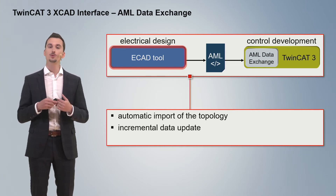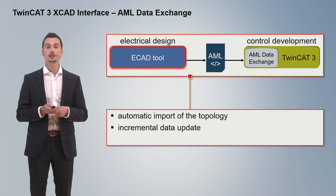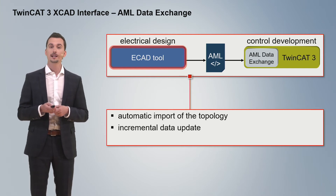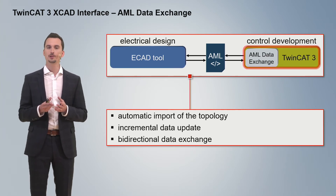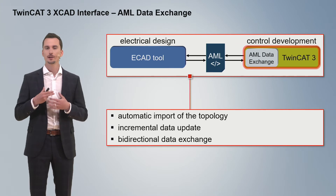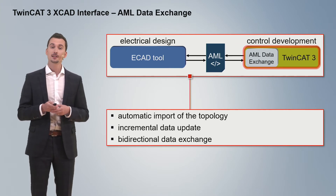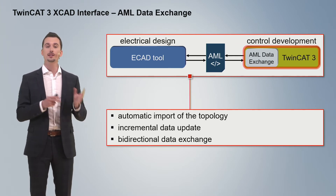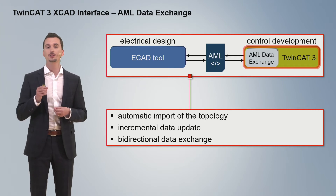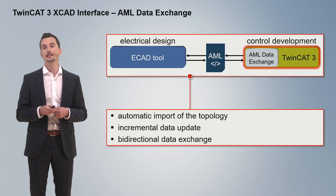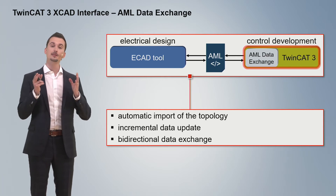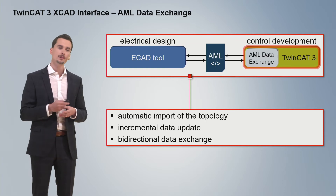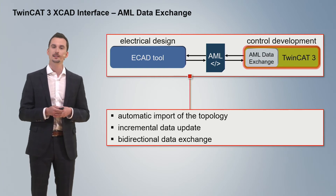If we switch to a later stage in your project, for example the commissioning phase, and there are any late changes necessary, for example changing an IO terminal, then you would like to update also the ECAD tool side. This is also possible with the help of a bidirectional data exchange. So you can simply export this new updated IO topology and import it into the ECAD tool side.